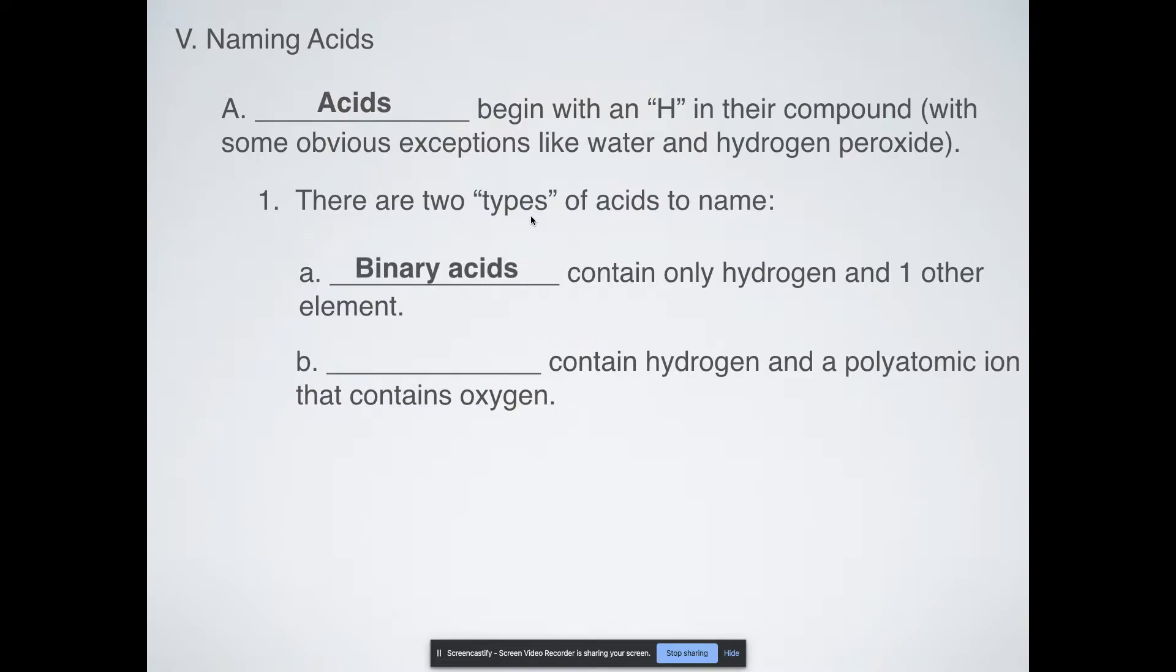We have binary acids where you only have hydrogen and one other element. Or we have oxyacids which contain hydrogen and a polyatomic ion that contains oxygen. Polyatomic ions have multiple parts to them. They have multiple elements.